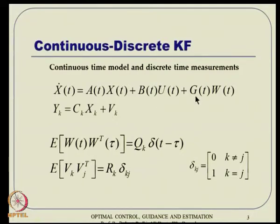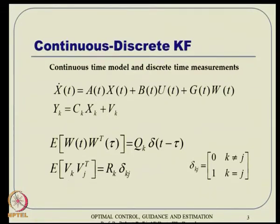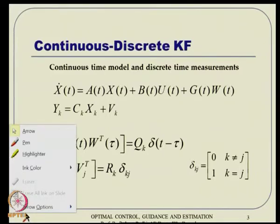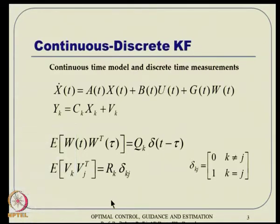Here W is continuous time and is represented as Q times delta(T - tau). Q_k has meaning only when T is T_k; if T equals tau it is 1, otherwise it is 0. The expected value of V_k times V_j transpose is R_k times the Kronecker delta - unless k equals j it is 0, and if k equals j it is 1.